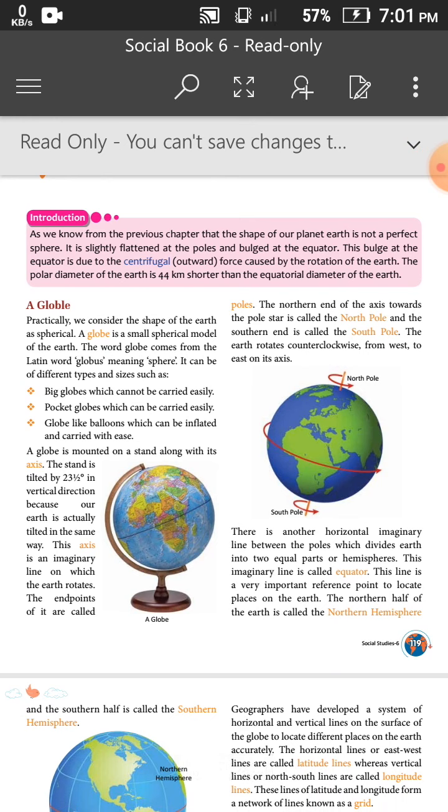Practically, we consider the shape of earth as spherical. A globe is the small spherical model of the earth. The word globe comes from the Latin word globus meaning sphere.